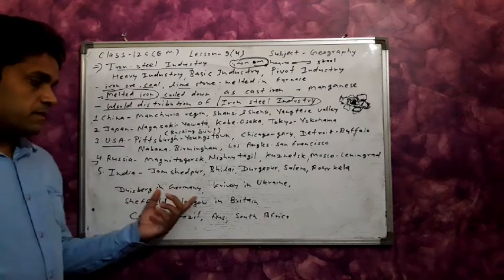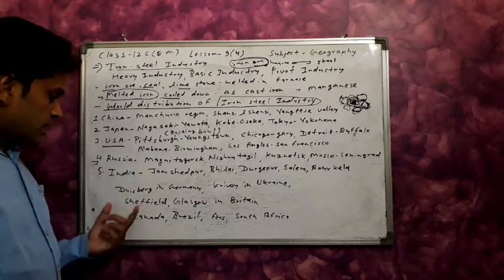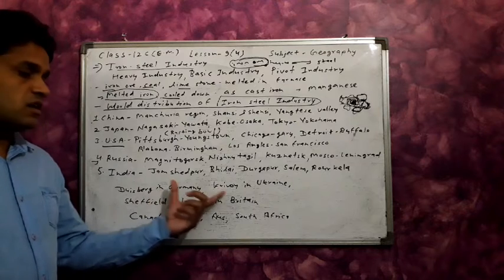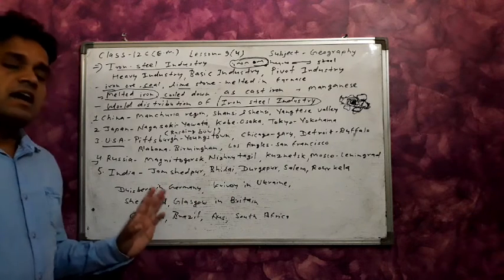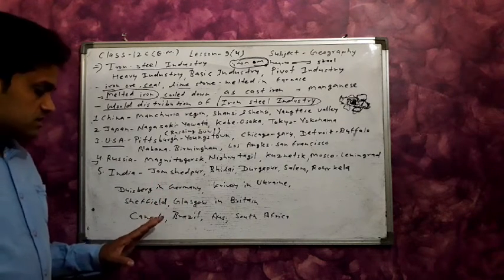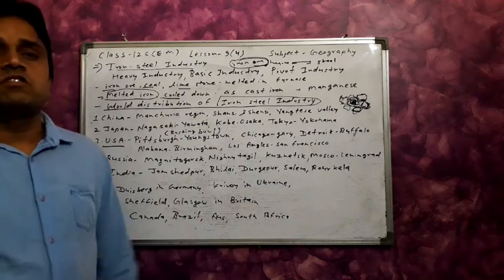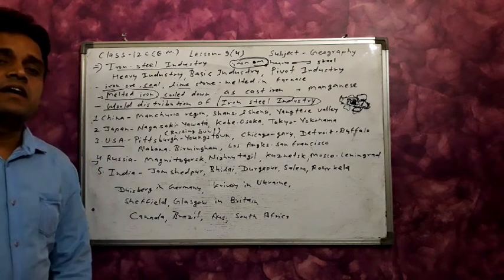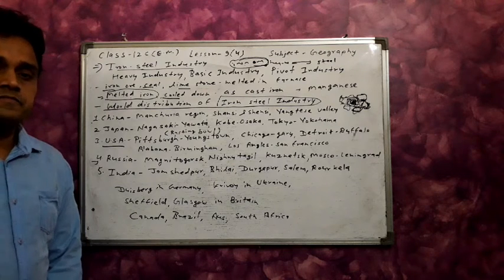Other famous iron and steel industry centers include Duisburg in Germany, Kryvyi Rih in Ukraine, Sheffield and Glasgow in Lancashire in Britain. Other countries with iron and steel industries include Canada, Brazil, Australia, South Africa, and many more.